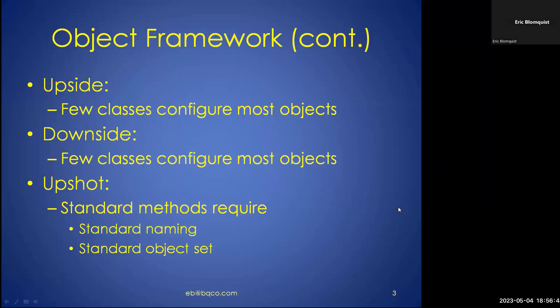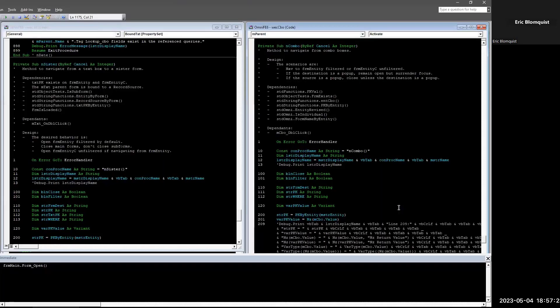The upshot of this object framework is that with three classes — not counting more obscure classes for tab controls — I've configured nearly all of the objects in the database. The downside is that with three objects configuring nearly all objects, this exposed some inconsistencies in my naming convention.